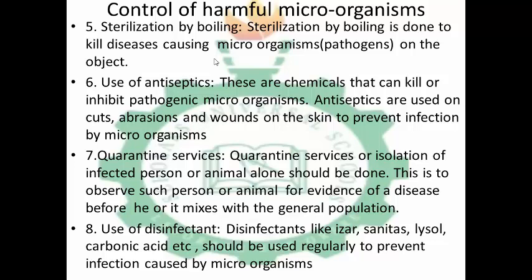Quarantine services involve the isolation of an infected person or animal. This is to observe such a person for evidence of disease before they mix with the general population. For example, a person coming from a place where a disease is present should quarantine themselves — staying alone in a place — and they will be observed for symptoms before being allowed to mix with the general population.